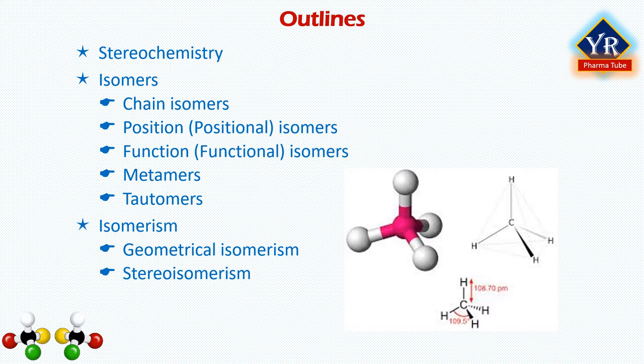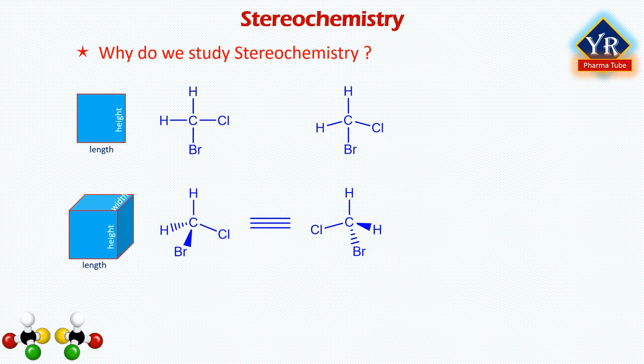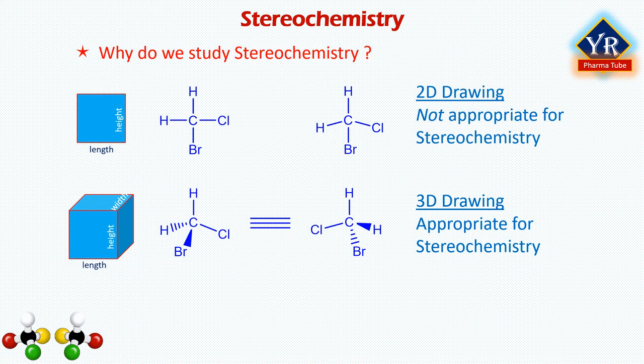Stereochemistry — why do we study stereochemistry? Stereochemistry is basically the study of three-dimensional structures, or 3D. To understand the difference between 2D and 3D structures, we have a square shown in different shapes. A square in 2D and 3D is shown to distinguish the difference. In a 2D square, you can measure only the length and height, while in a 3D square, you can measure not only the length and height, but also the width or depth.